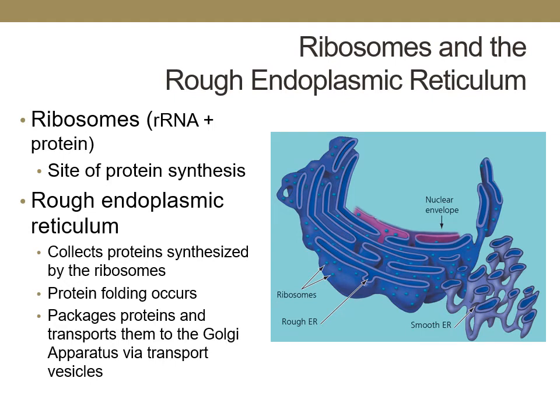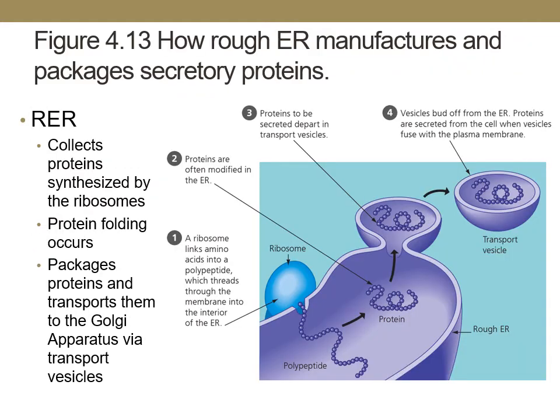Ribosomes are made up of ribosomal RNA and protein, and these structures are the sites where proteins are made. There are ribosomes that are free-floating in the cytoplasm and other ribosomes that are closely associated with the rough endoplasmic reticulum organelle, which is located just outside of the nucleus. The rough endoplasmic reticulum collects the proteins produced by the ribosomes, and protein folding occurs inside of the hollow spaces of the rough endoplasmic reticulum. When the proteins are completely folded, they are packaged into transport vesicles made of the membrane of the rough endoplasmic reticulum and sent to the Golgi apparatus.